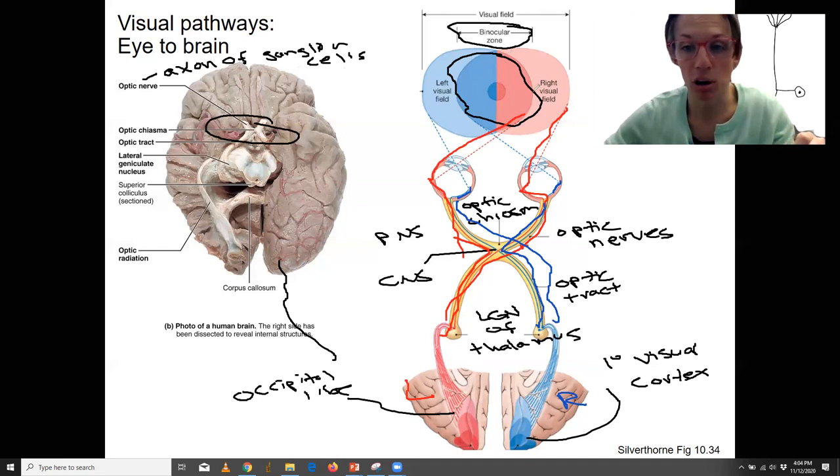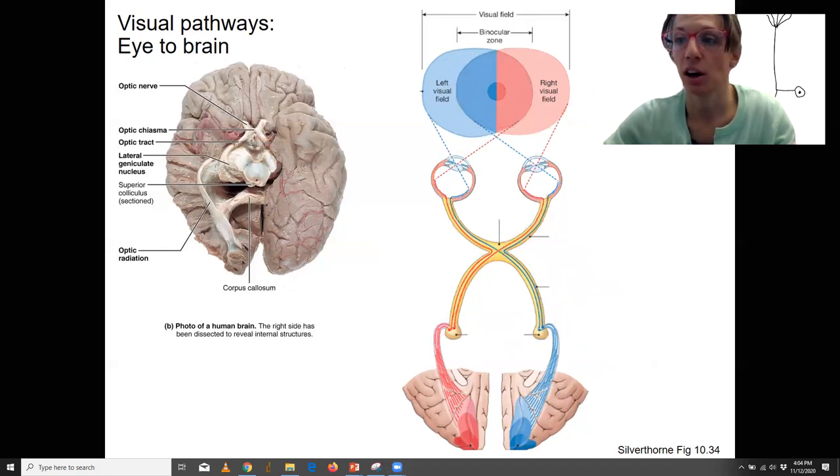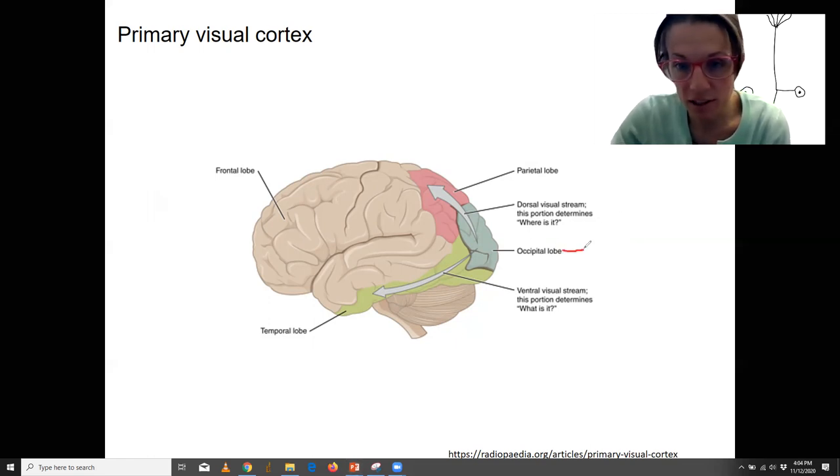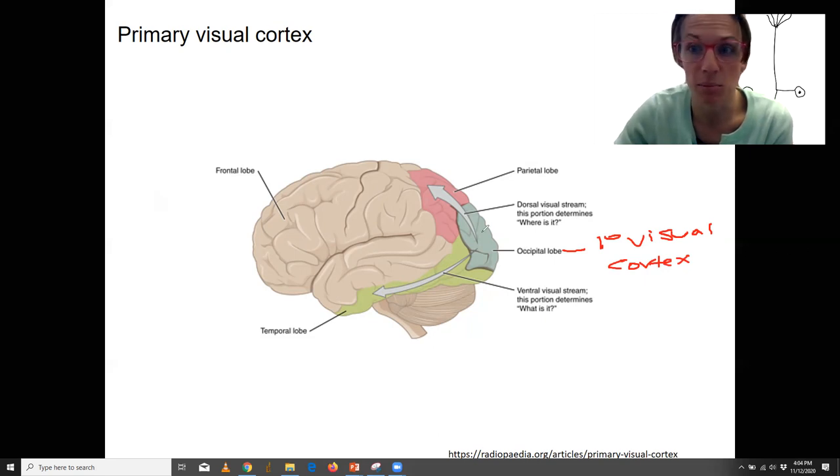Once you're in the primary visual cortex, a lot of processing occurs. We're not going to go into detail on that. You could take sensation and perception where you would probably learn more about this. So this is our primary visual cortex within the occipital lobe. Visual cortex. And there are different, a lot of processing. We are very visual creatures, humans, and most primates.